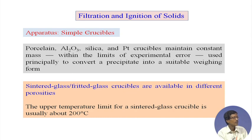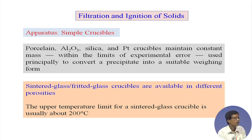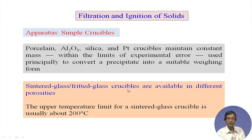For these crucibles, you should know a little about the different types and where we use which one. As I discussed, the sintered glass or fritted glass crucible has a bottom with a glass frit attached. Because this glass frit is attached, we consider this a sintered glass crucible, and you do not require filter paper for filtration when using it.